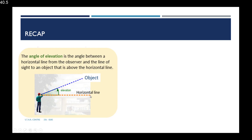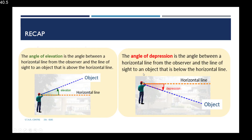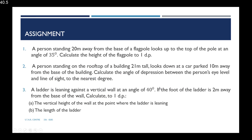To recap: the angle of elevation is the angle between the horizontal eye level and the line of sight when looking up at an object. The angle of depression is the angle between the horizontal eye level and the line of sight when looking down at an object. For practice, there is an assignment of three questions. Diagrams are not provided, so it is helpful to do a sketch for each. You can pause the video, write down the questions, and solve them — solutions will be posted at a later date.